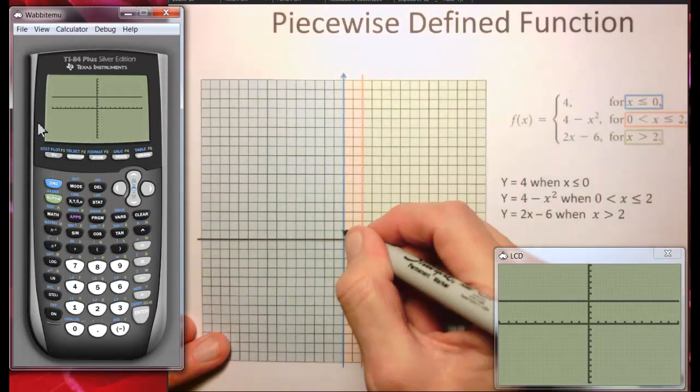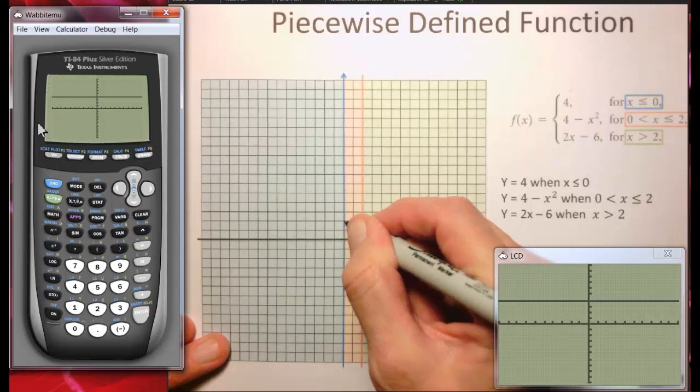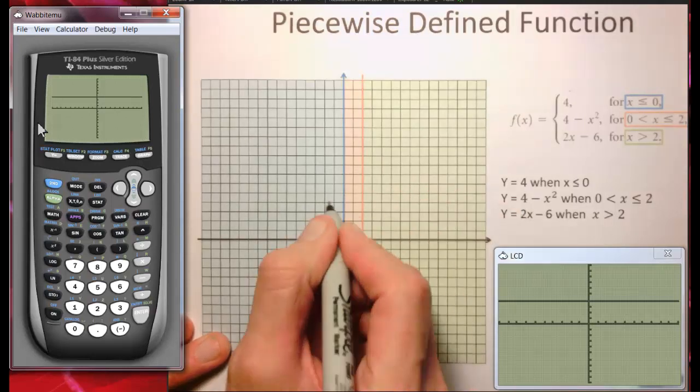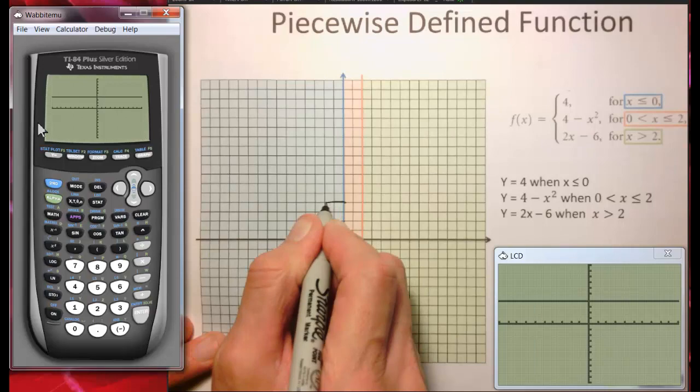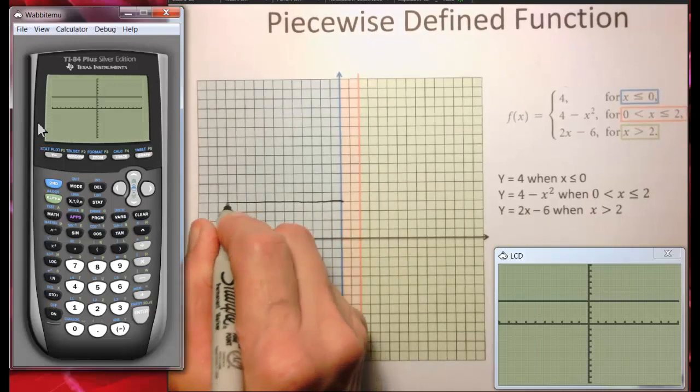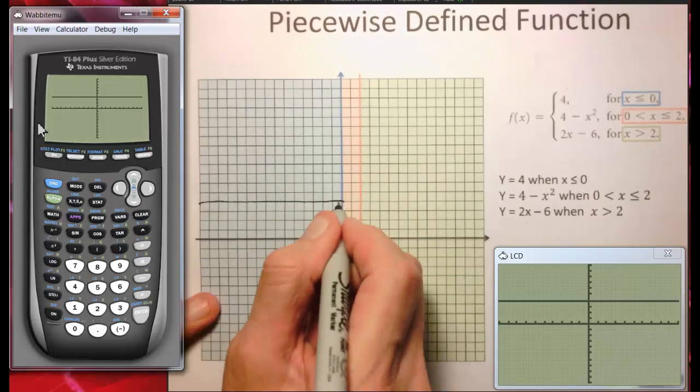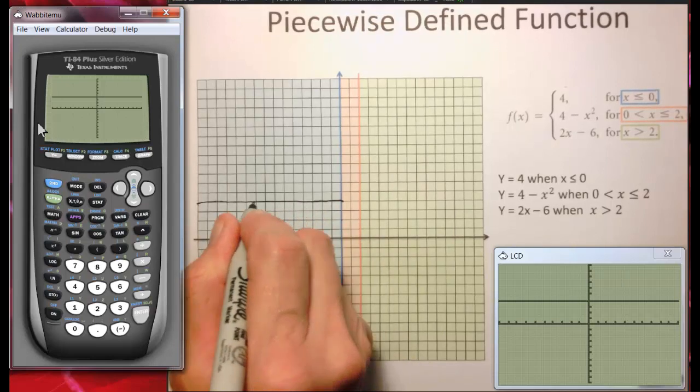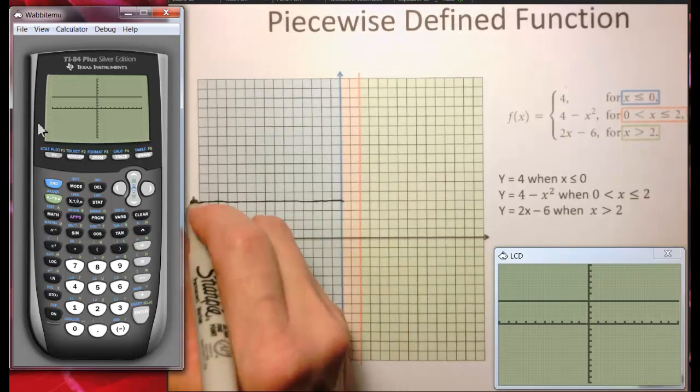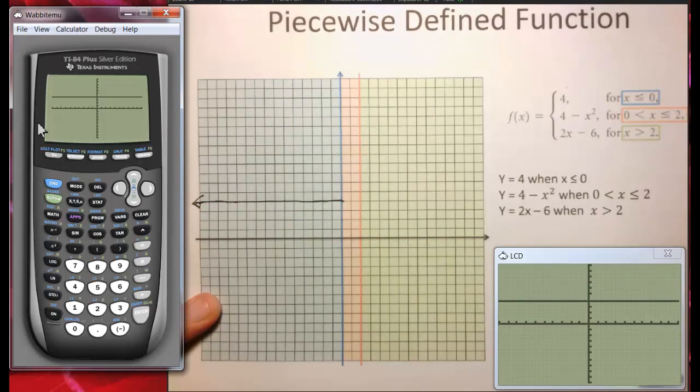So I'm going to graph that. Here's the y-axis. One, two, three, four. So this goes to the left forever like that.